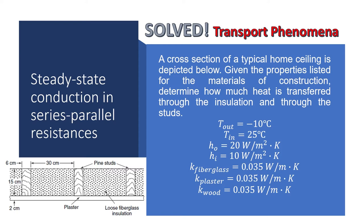This is the problem statement. A cross-section of a typical home ceiling is depicted below. Given the properties listed for the materials of construction, determine how much heat is transferred through the insulation and through the studs. We are given parameters such as the inside and outside temperatures, the inside and outside convective heat transfer coefficients, as well as the thermal conductivities of the materials used — that's fiberglass, plaster, and wood.